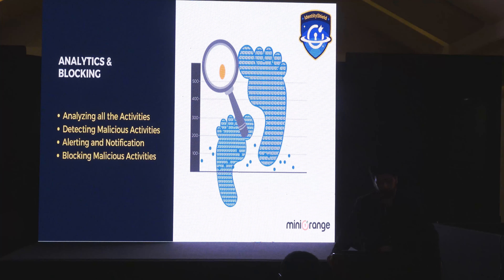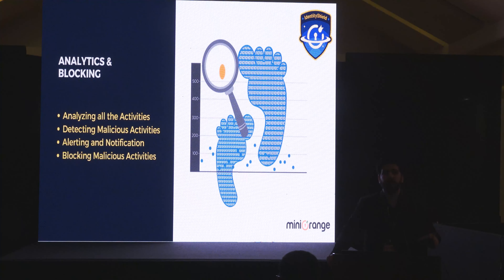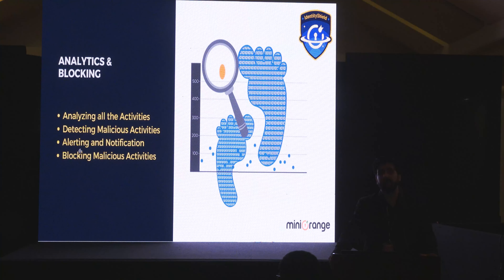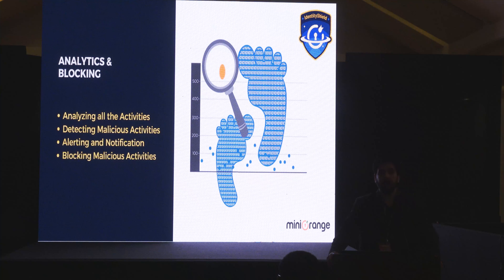Analytics and blocking: we scan each and every activity. Because we are scanning everything, using algorithms we capture events that can potentially be malicious. We analyze those events, detect the malicious ones, and send alerts and notifications to administrators. For example, if a particular piece of malicious code is downloaded, you will get a notification: this user downloaded this particular software at this time, which can cause issues. And it also blocks the activity.